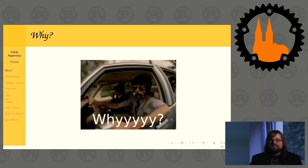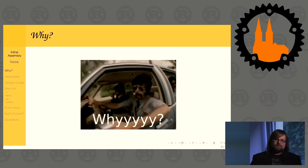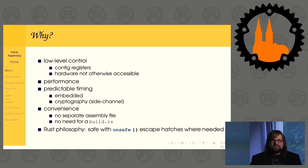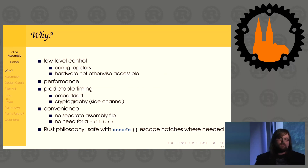So why would you want inline assembly? The first pushback you always get is: Rust is supposed to be that super safe language — no segfaults, no data races, no anything. So what are you doing putting inline assembly in there? The answer is that the Rust philosophy is: be safe, but if necessary have an unsafe escape hatch that you can use in an unsafe block, making sure that what you're doing is actually safe, but providing that escape hatch if necessary.